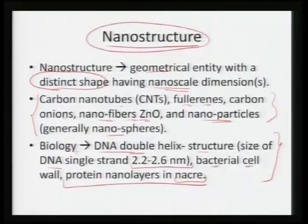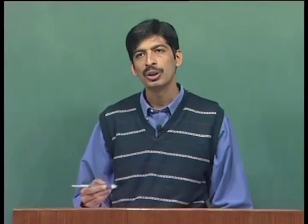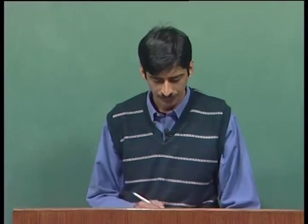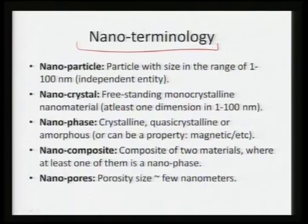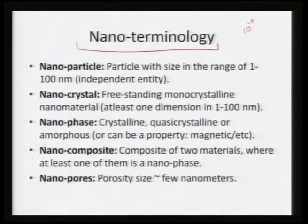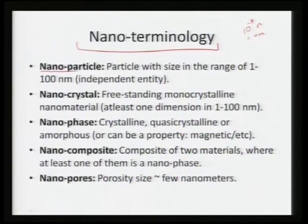These nanostructures have certain distinct shapes associated with them and are not new — they already exist in nature, such as the DNA double helix structure, protein nano layers in nacre, and apatite crystals in our bones. It becomes essential to understand certain terminology for learning about nanomaterials. Nano is a prefix for 10 to the power of minus 9, and when associated with the unit of length it becomes 10⁻⁹ meters, or one nanometer.